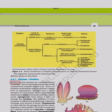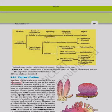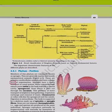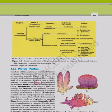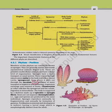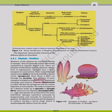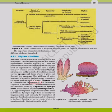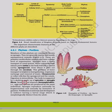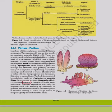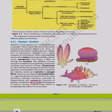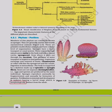Phylum Porifera: Members are commonly known as sponges, generally marine and mostly asymmetrical. These are primitive multicellular animals with cellular level of organization. Sponges have a water transport or canal system — water enters through minute pores in the body wall into a central cavity, the spongocoel, and exits through the osculum, aiding food gathering, gas exchange, and waste removal. Choanocytes or collar cells line the spongocoel. Digestion is intracellular. Sponges are hermaphrodites; they reproduce asexually by fragmentation and sexually by gametes, with indirect development.